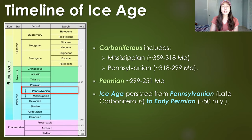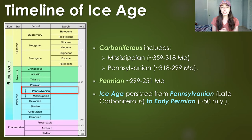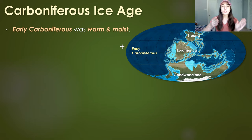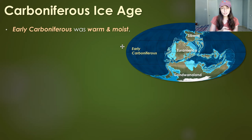This ice age persisted for around 50 million years before the middle and late Permian brought global warming, which we'll talk about a little at the end of this video — but mostly in the great dying, or Permian extinction, video. To set the scene, the early Carboniferous, or Mississippian half, was actually quite warm and moist.